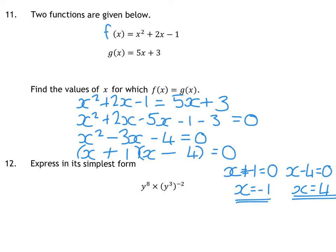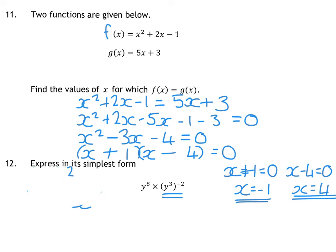Question 12 is indices — multiply with a power raised. BODMAS says do the power raised bit first. If you have something raised to a power you multiply the indices: for example x cubed all squared is x cubed times x cubed, and 3 plus 3 is 6, the same as 3 times 2. So 3 times negative 2 is negative 6, giving y to the 8 times y to the negative 6. When multiplying, add the powers: 8 plus negative 6 is 2, so the answer is y squared.